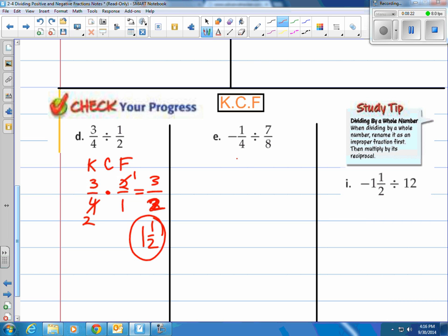E. Keep -1/4. Change. Flip. 8 over 7. Reduce if you can. I can.